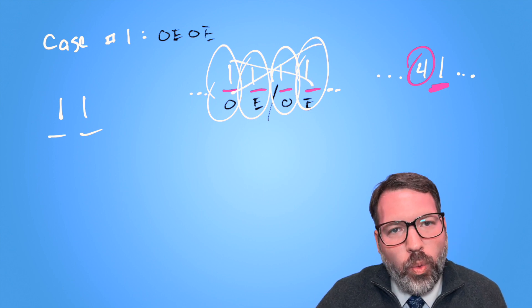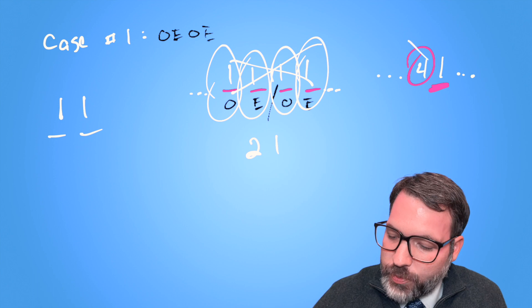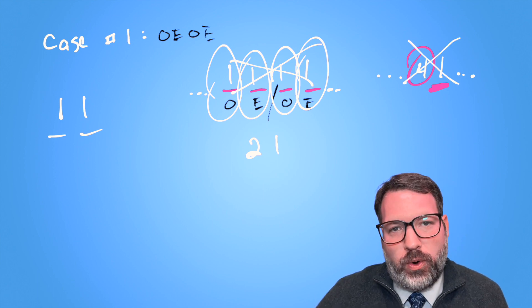And so it would not have been one, one, one, one. It would have been two ones, which means we couldn't have generated a four one in the next term.